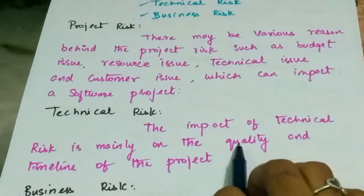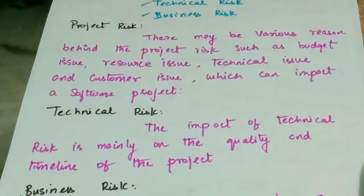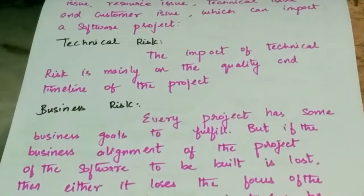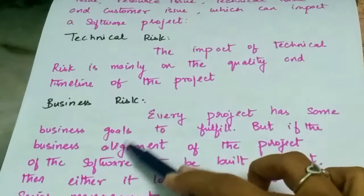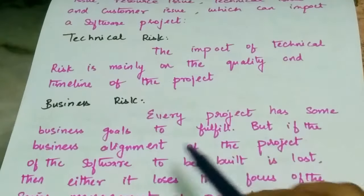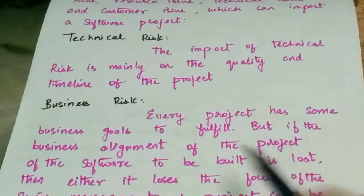Technical risk mainly impacts the customer and timeline of the project. Business risk: every project has the same business goals to fulfill, but if business alignment of the software to be built is lost, then the project loses focus.